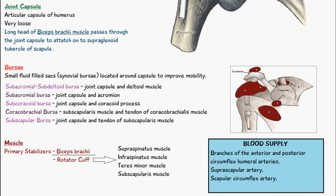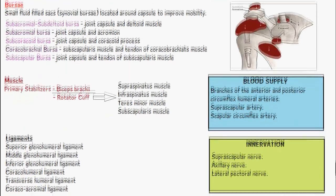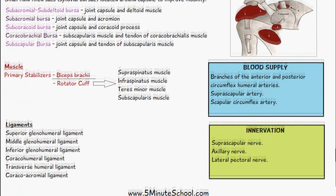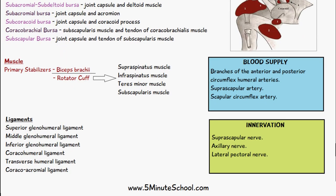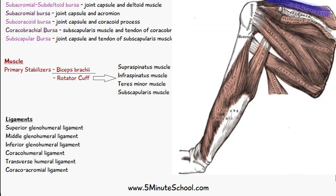The primary stabilizers of the shoulder involve the biceps brachii muscle and the muscles of the rotator cuff. The rotator cuff muscles are a group of muscles including the supraspinatus, infraspinatus, teres minor, and subscapularis muscles.